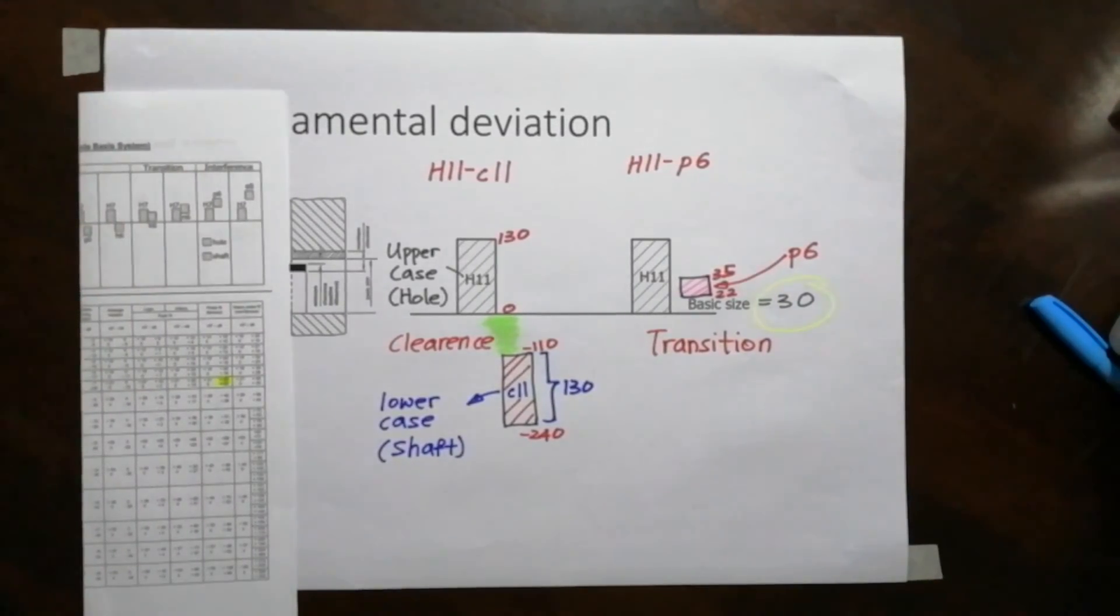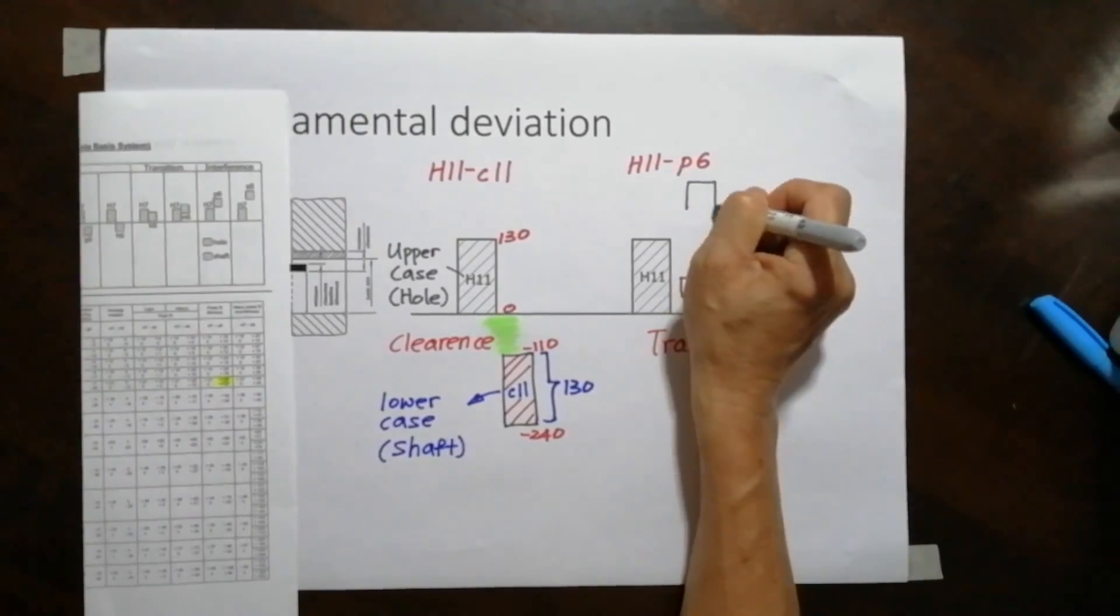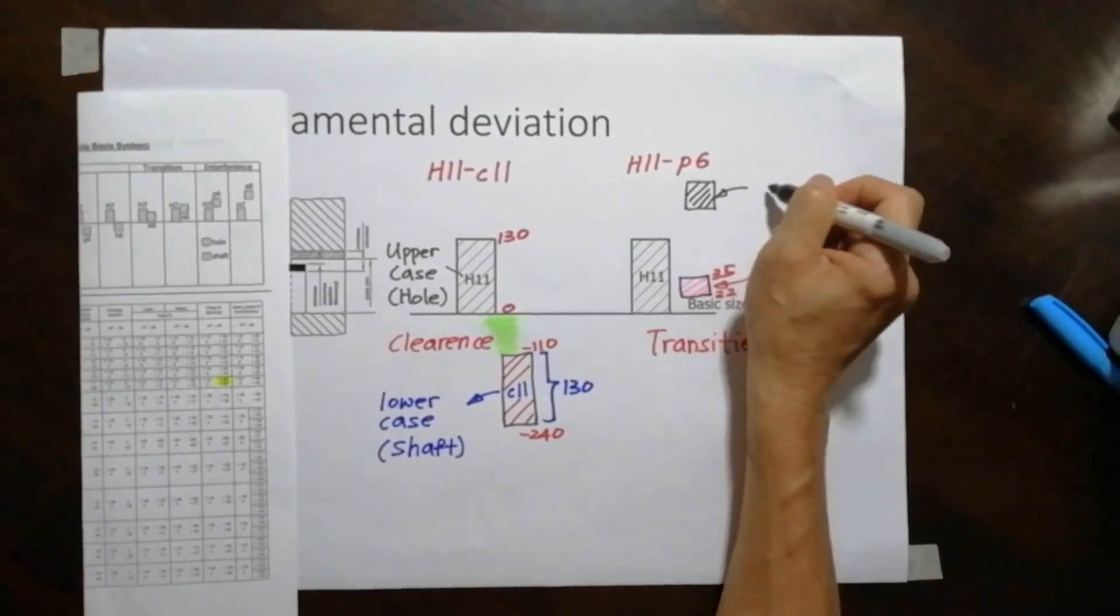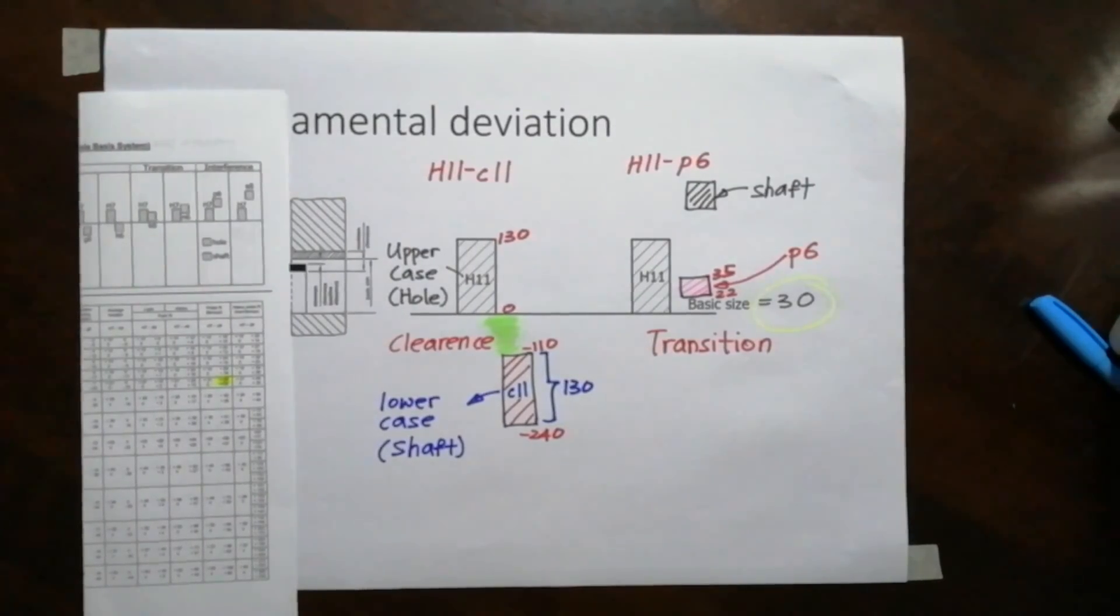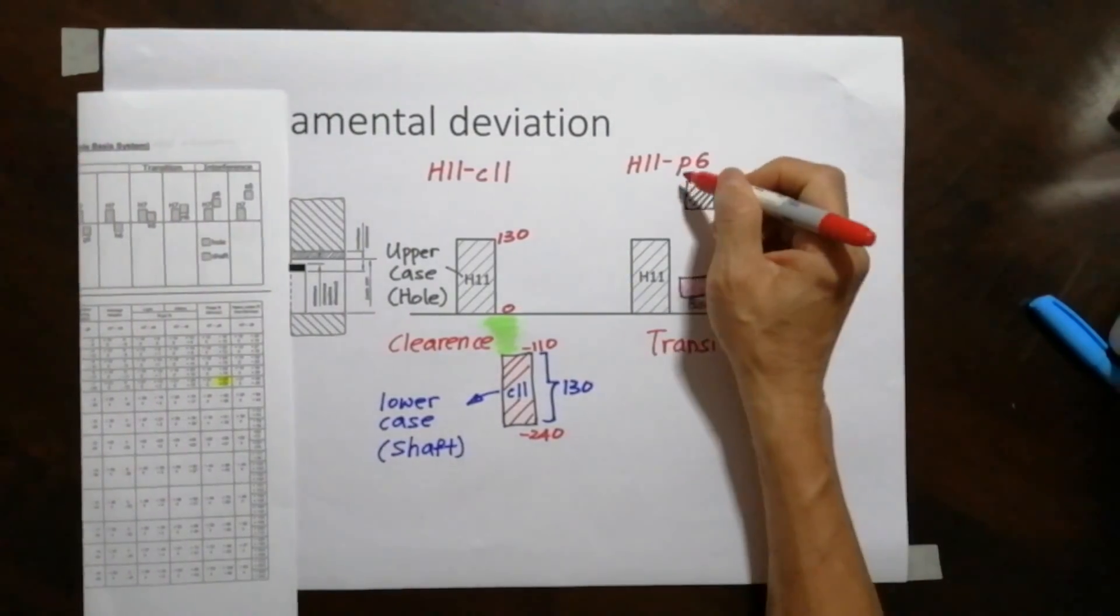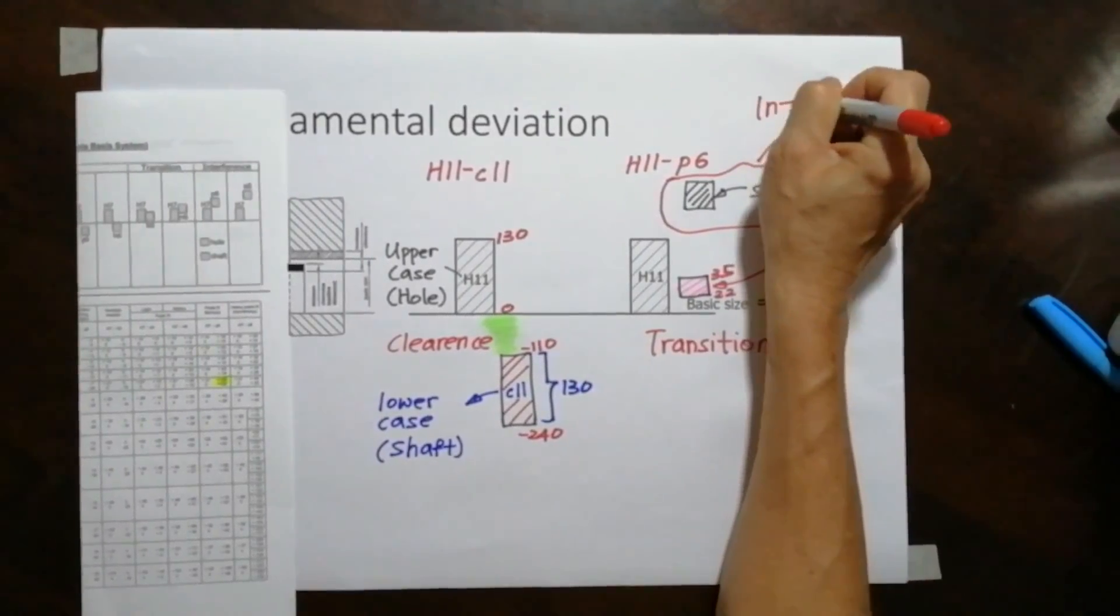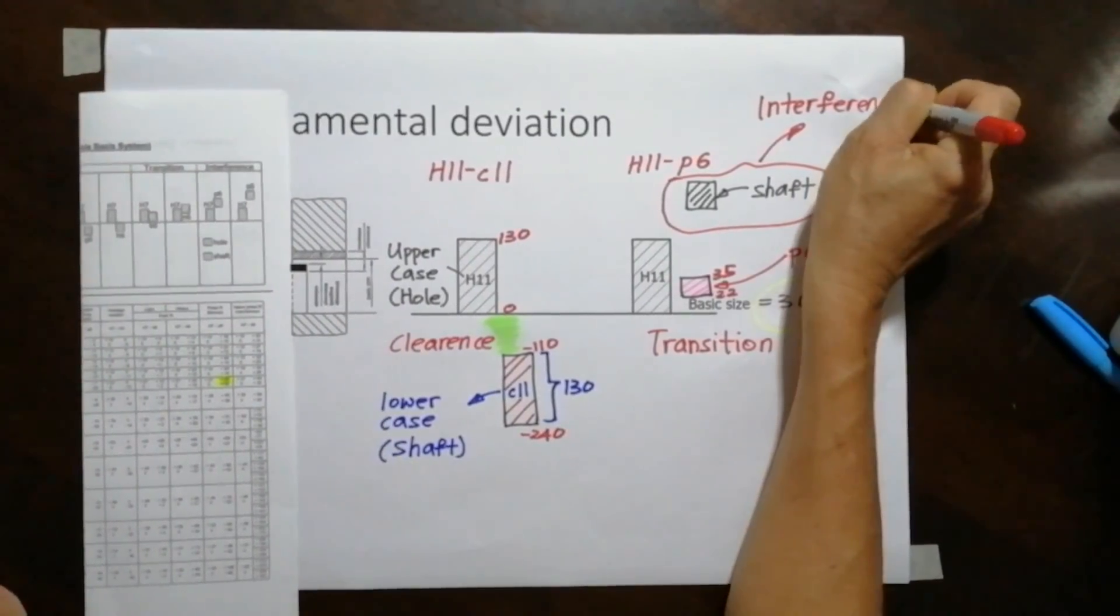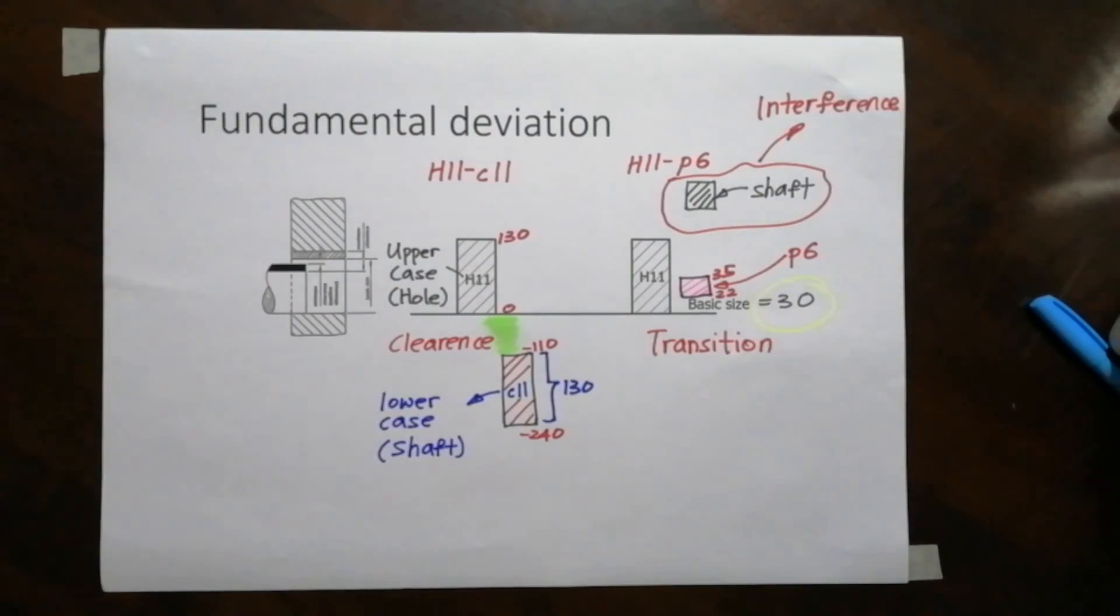Let me give you an example of where interference fit comes in. So let's say if the box, if the box ends up to be here. Let's say if this is a shaft on, it's ended up all the way up. Then this one will be interference fit.